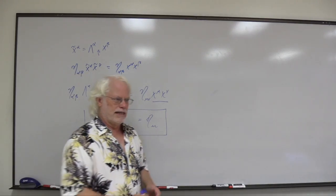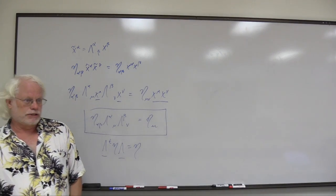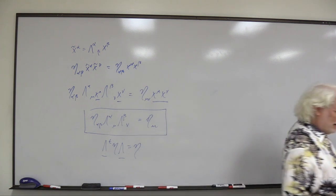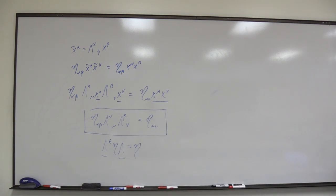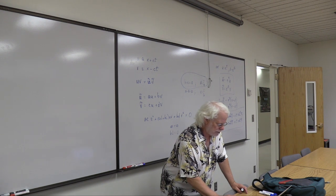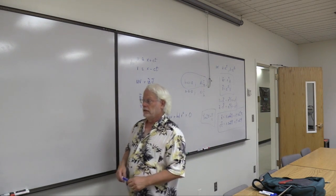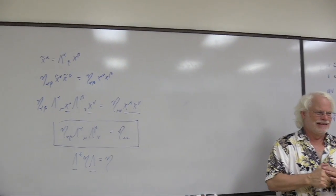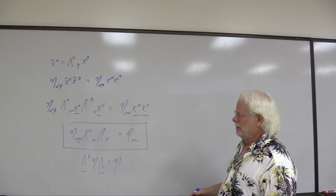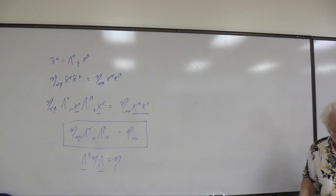We're off and running doing group theory, finding explicit representations for the Lorentz group — but we don't need to do that now. We'll do enough with groups later. Most of this is summarized in my notes. Let me talk a bit about Lorentz invariant tensors. There's the metric — the metric is a Lorentz invariant tensor. You do a Lorentz transformation in the rank-2 way and it gives the same thing back. That's a rare property.